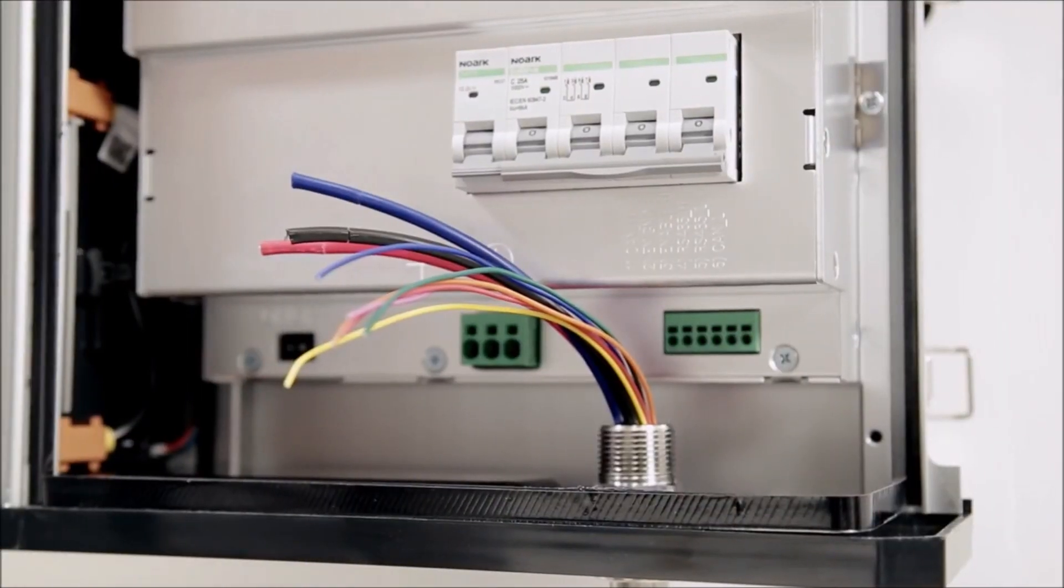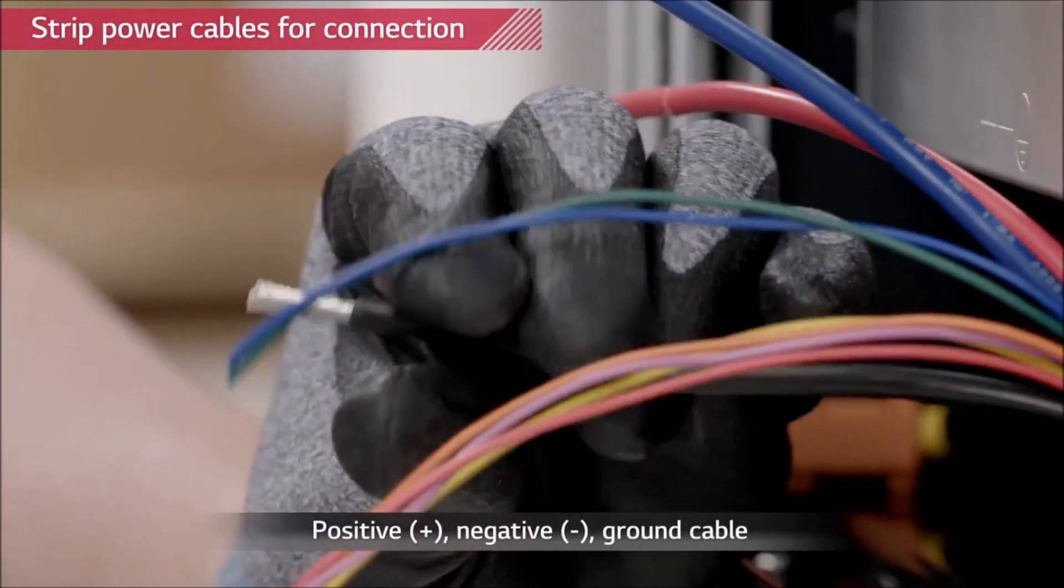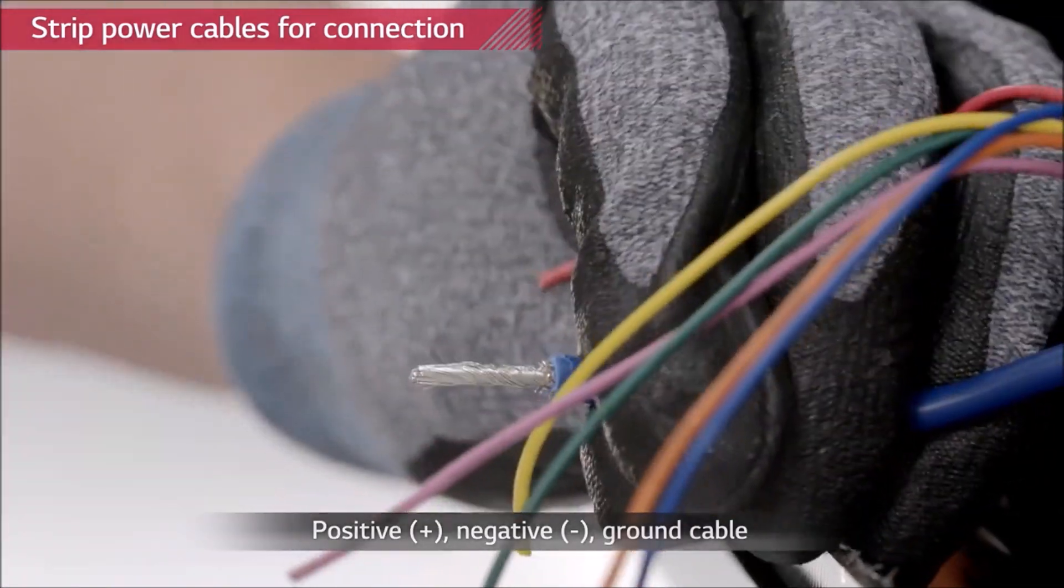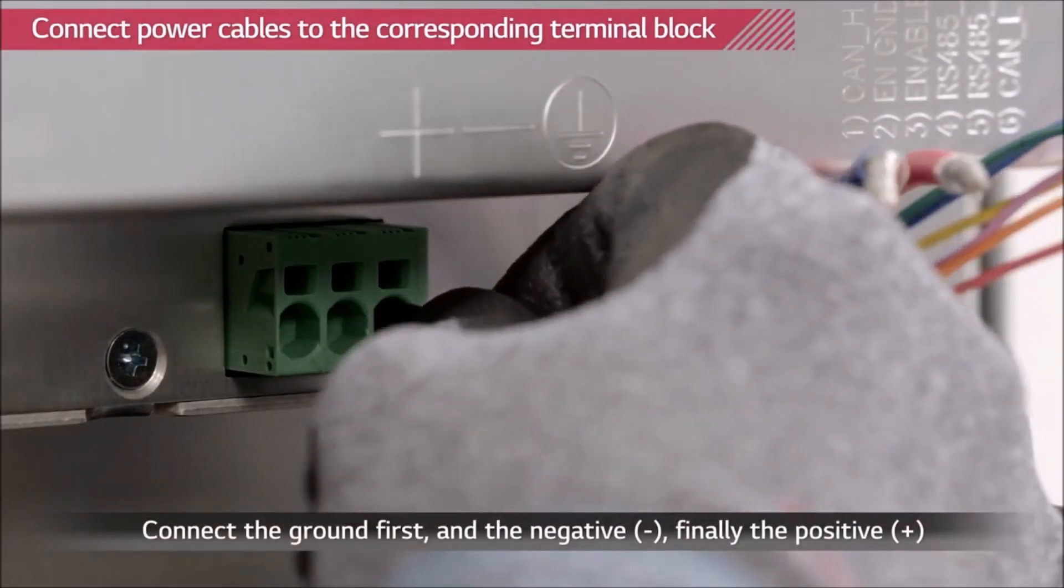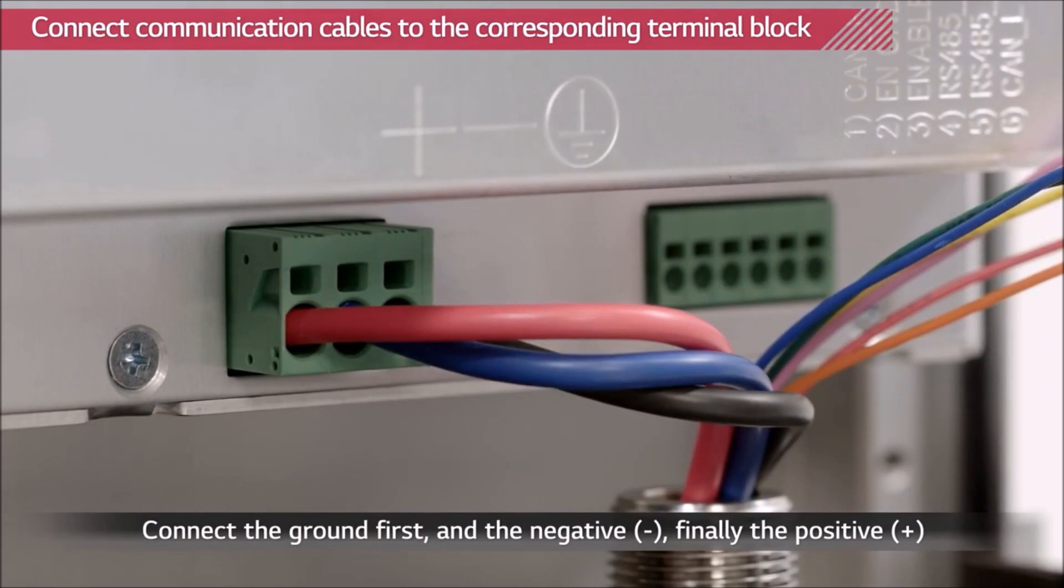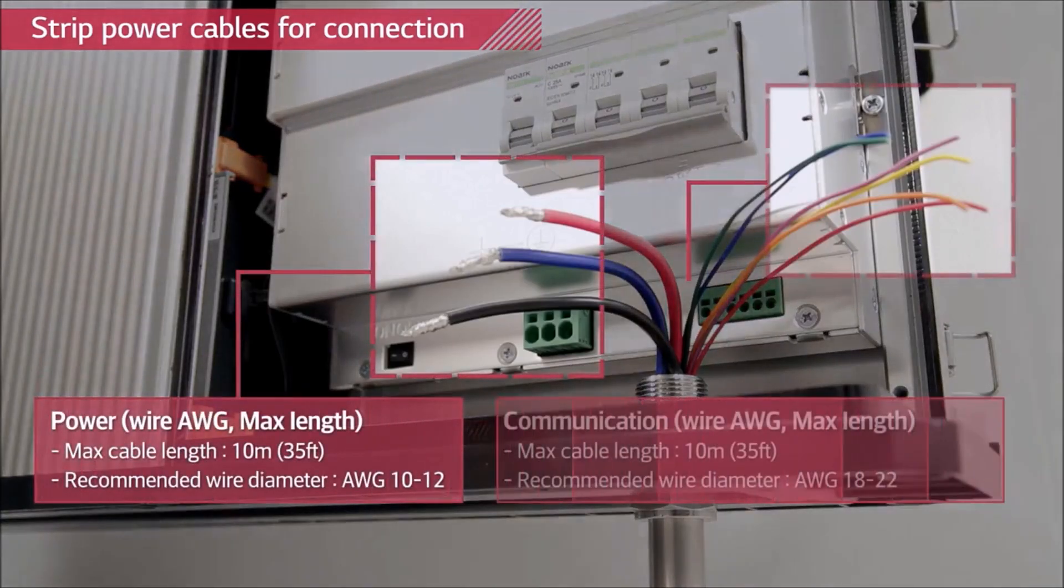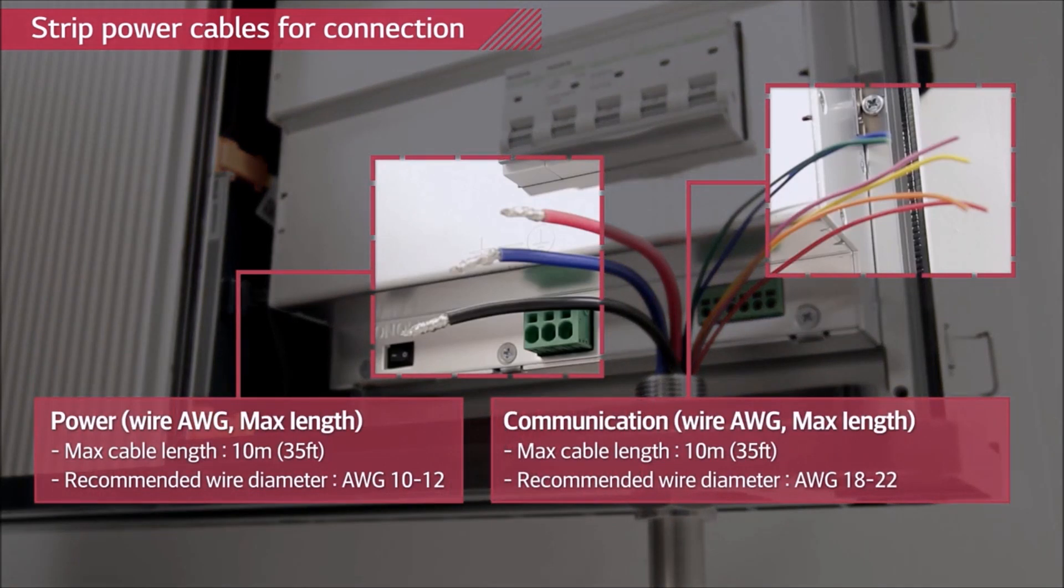Use wire stripper to cut off the wire coating. Connect power cable to the corresponding terminal block. Corresponding terminal blocks are marked above them.